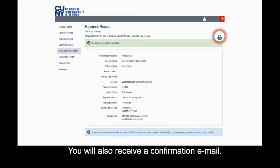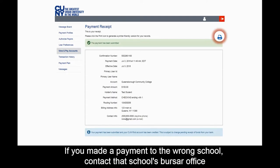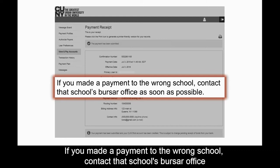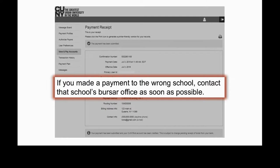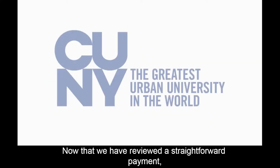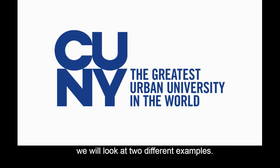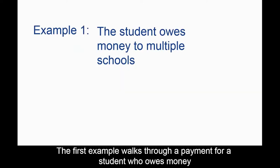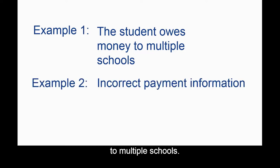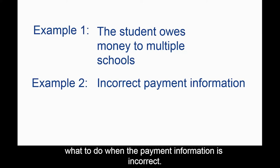A payment receipt will be available to print upon payment submission. You will also receive a confirmation email. If you made a payment to the wrong school, contact that school's bursar office as soon as possible. Now that we have reviewed a straightforward payment, we will look at two different examples. The first example walks through a payment for a student who owes money to multiple schools, and the second explains what to do when the payment information is incorrect.